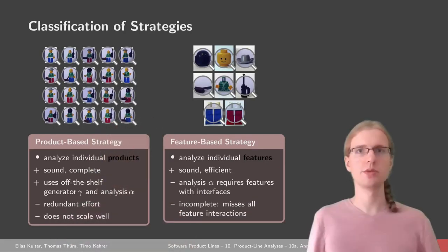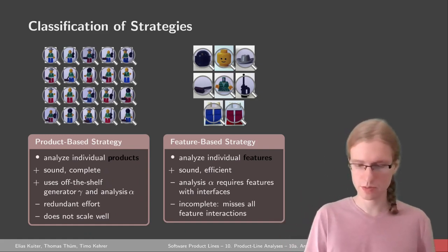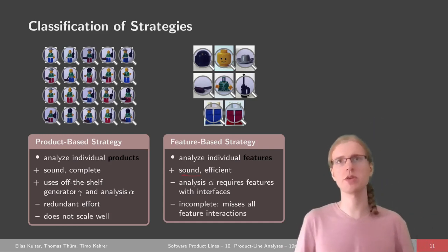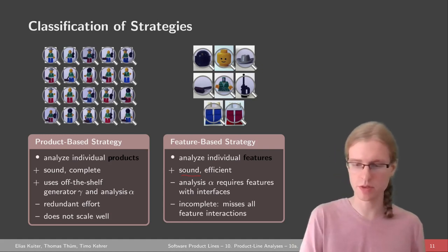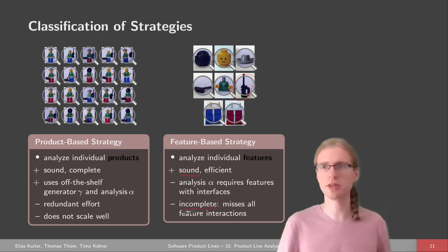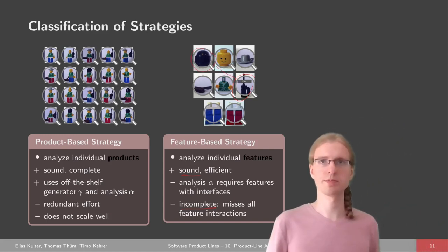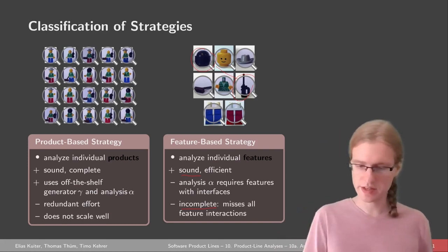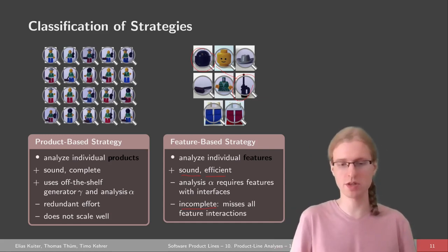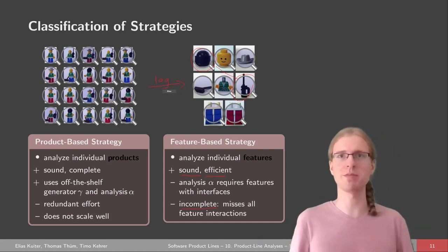To recap the feature-based strategy: the idea is to analyze features rather than products. All errors found will usually be actual errors of the product line, so it's sound. But it's not complete — we are missing feature interactions potentially, and cannot detect problems between two features. However, this is typically much more efficient than the product-based strategy because there is usually just a logarithmic number of features compared to the number of products.